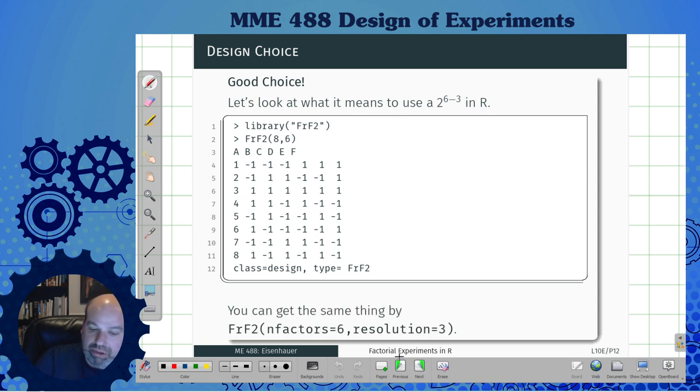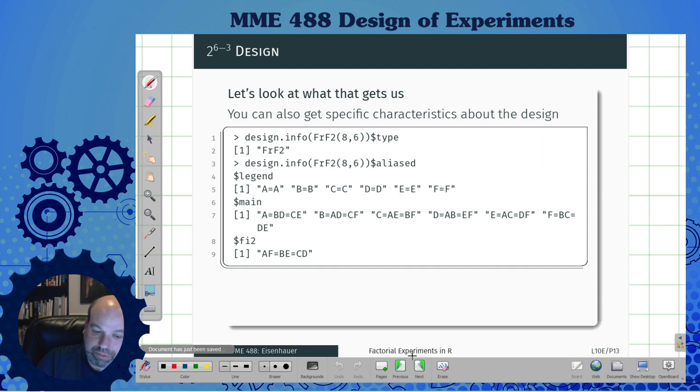You can get the same things by also saying I can say number of factors is six and I want a resolution of three or better. This will look up a design coming from a catalog. You can also get some specific characteristics about the design. So you ask it for design info. It says what type is it? It's an FRF2.